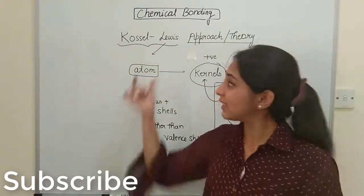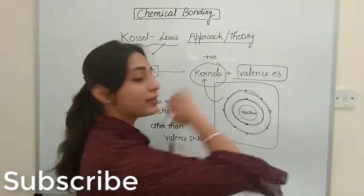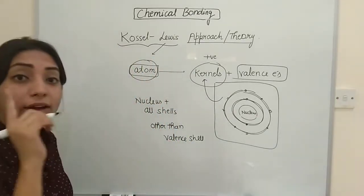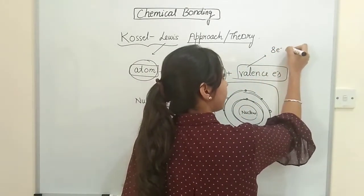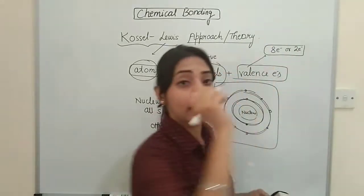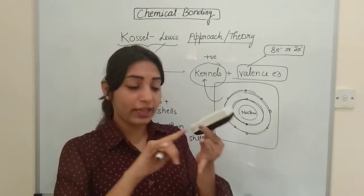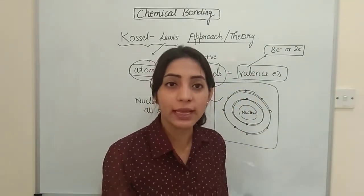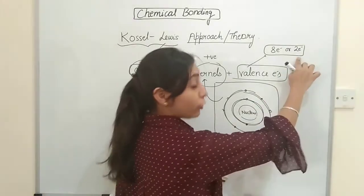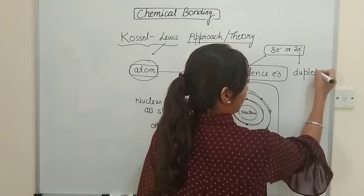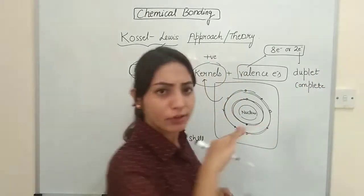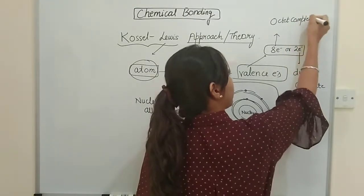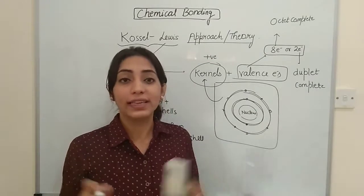Lewis said that an atom would be stable if and only if the valence shell has eight electrons or two electrons only. If the valence shell has three electrons it's not stable; if it has seven electrons it's not stable. If the valence shell has two electrons, it is said to be duplet complete. If the valence shell has eight electrons, we say octet is complete. Other than these two cases, no other case is stable.